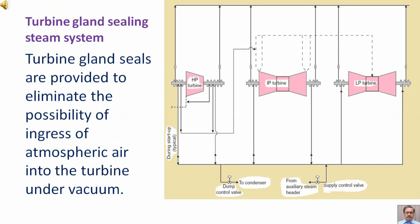Turbine gland seals are provided to eliminate the possibility of ingress of atmospheric air into the turbine under vacuum.